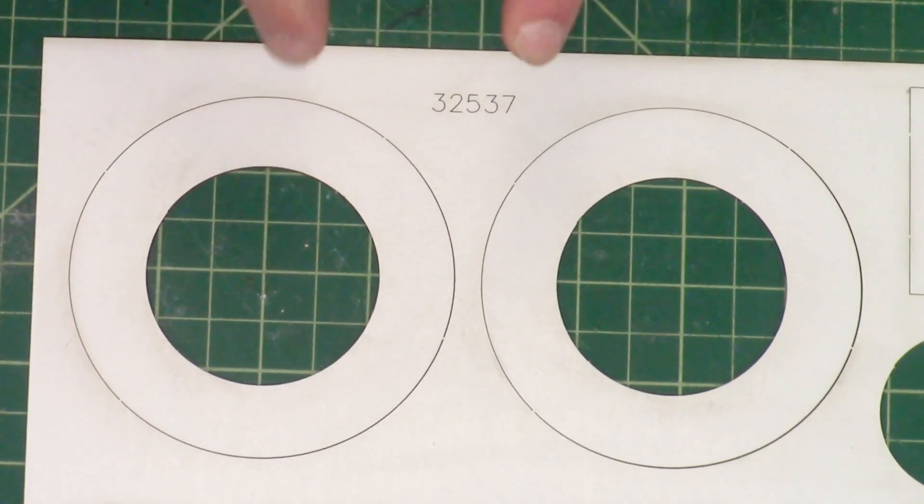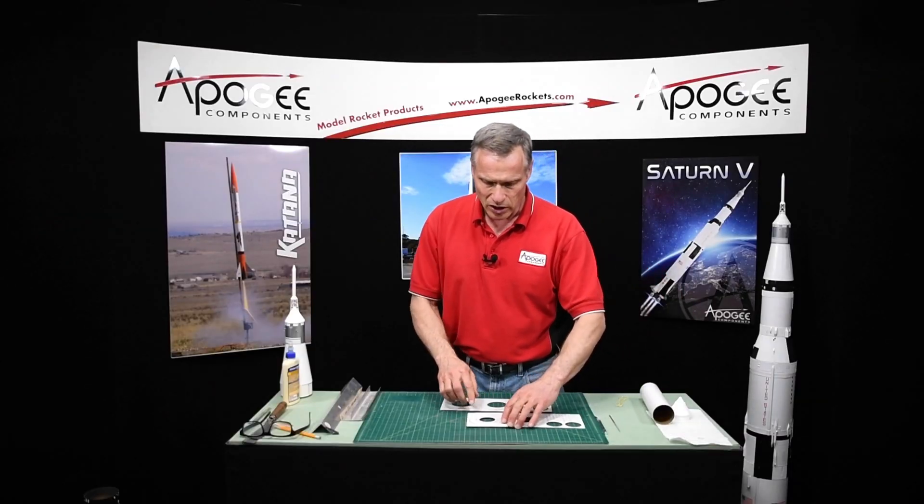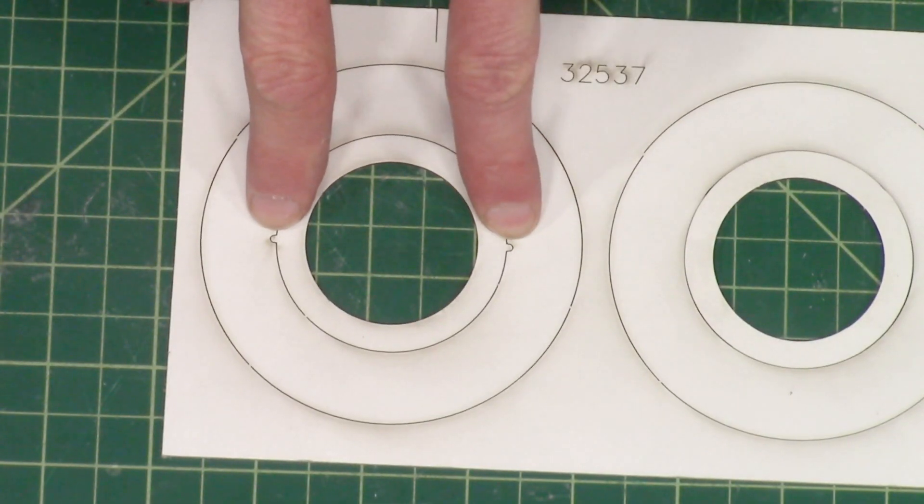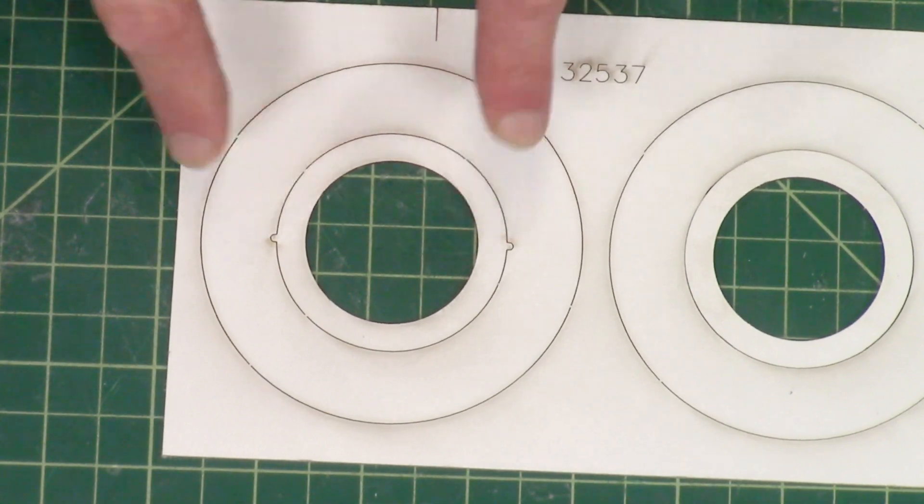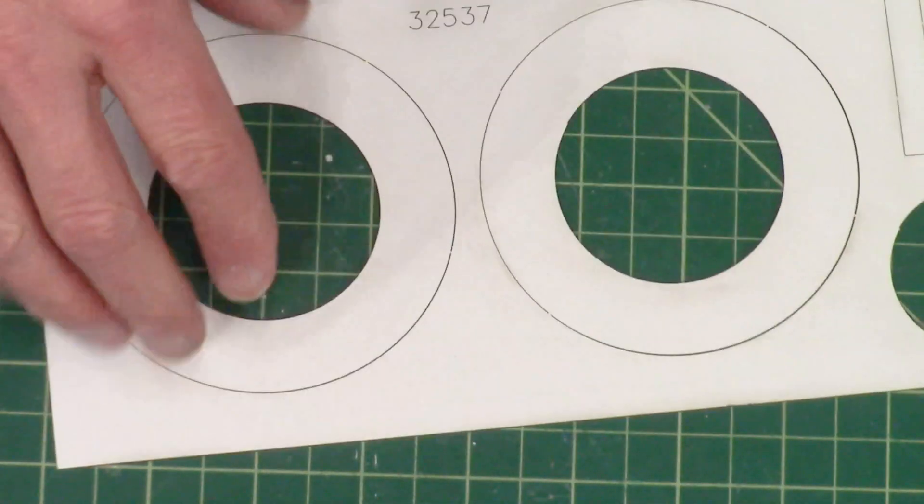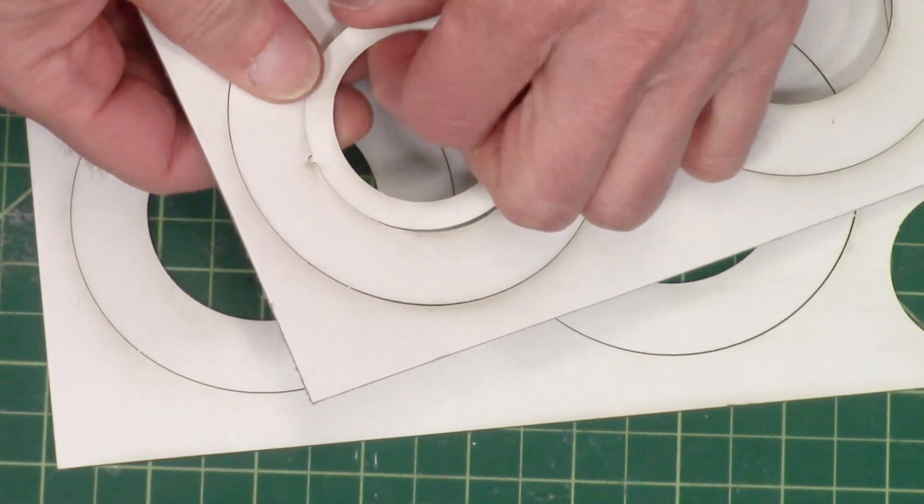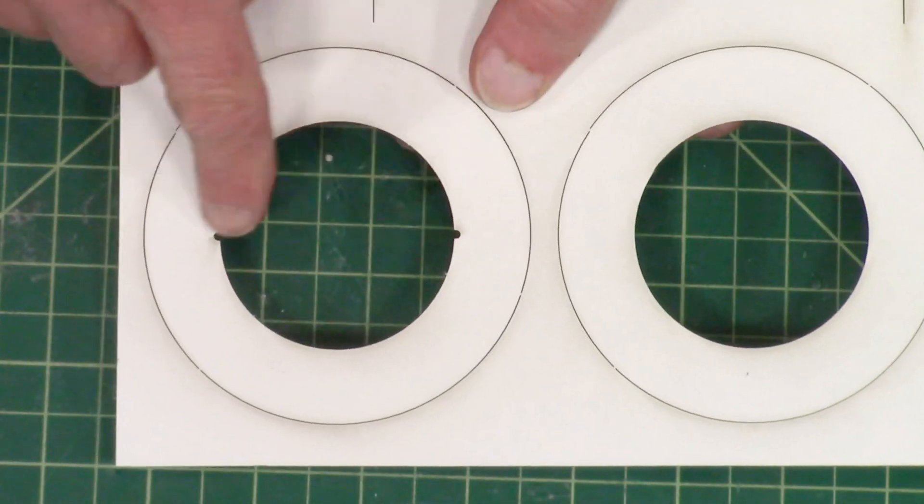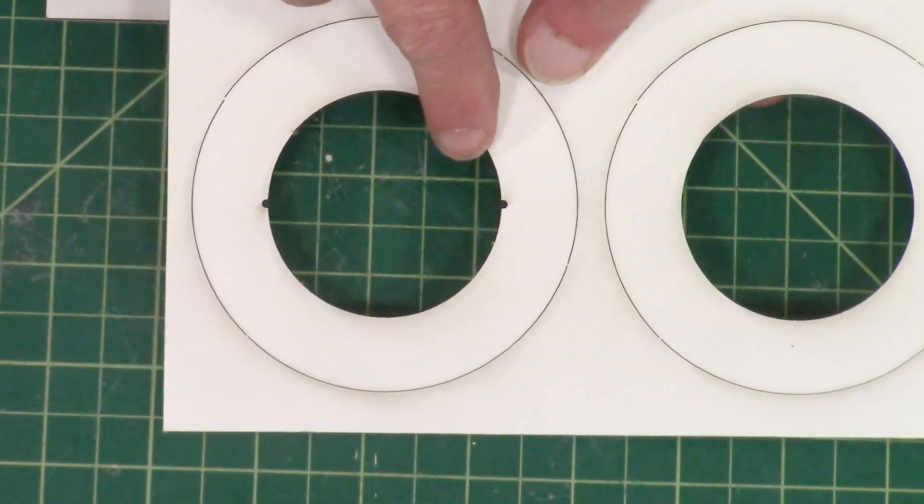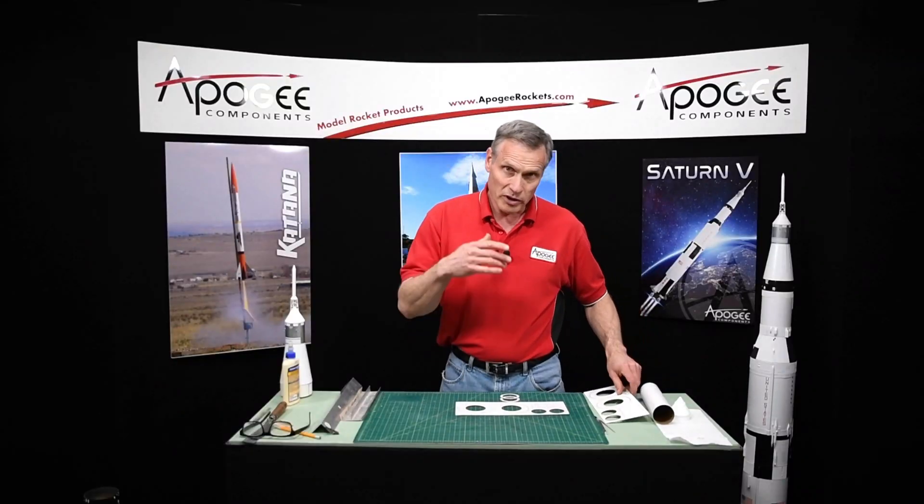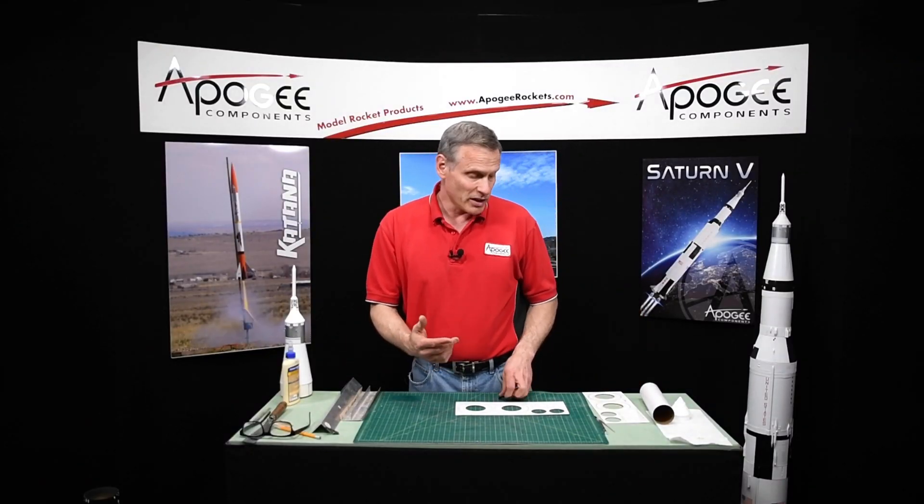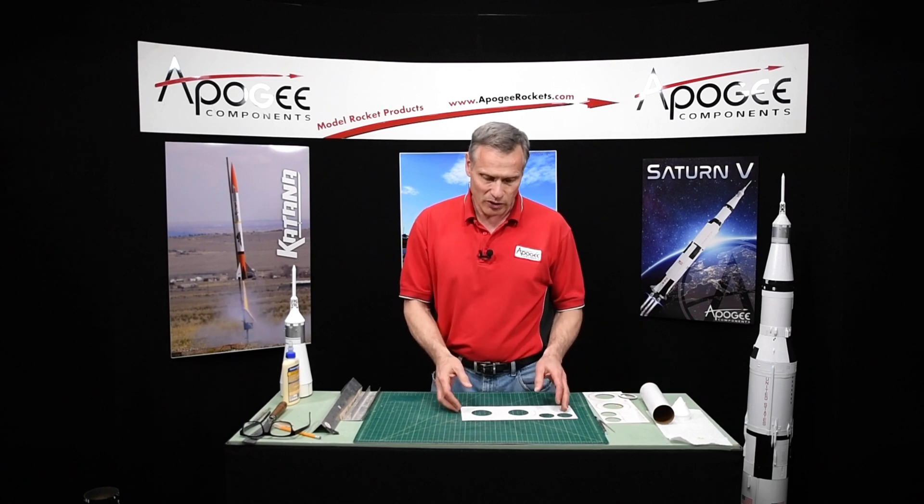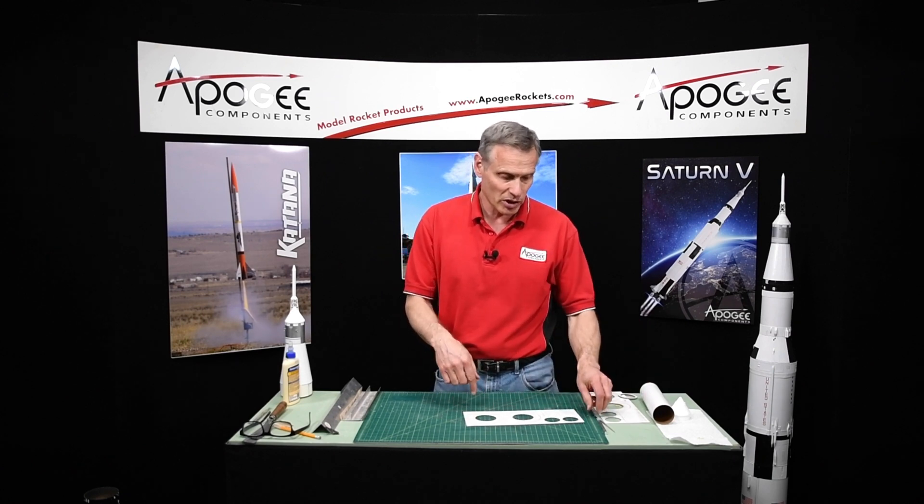This is the old style and we have changed it recently to this new style that has a couple little cutouts right here. If you have the old style that's what we're going to use. If you have the new style, it'll be a little bit simpler because these little notches are already made. And since we originally did this kit as a die cut, those notches weren't in there. But now that we're laser cutting, we're putting them in.